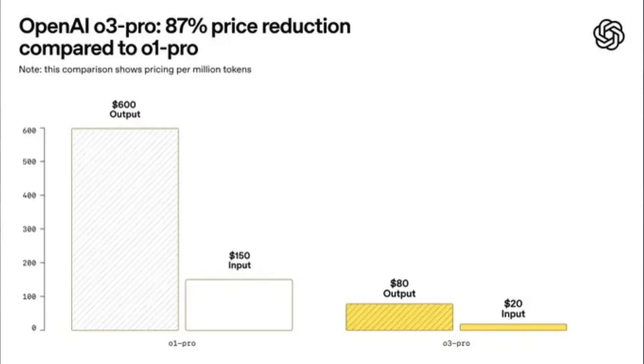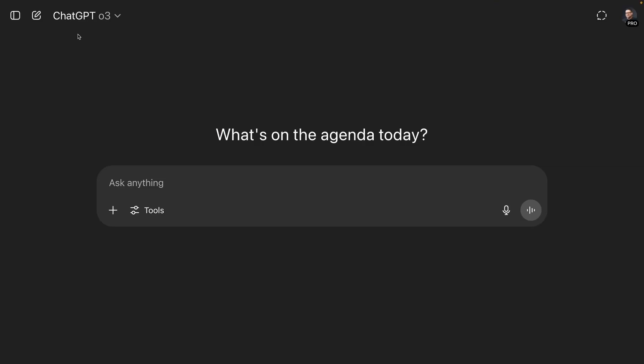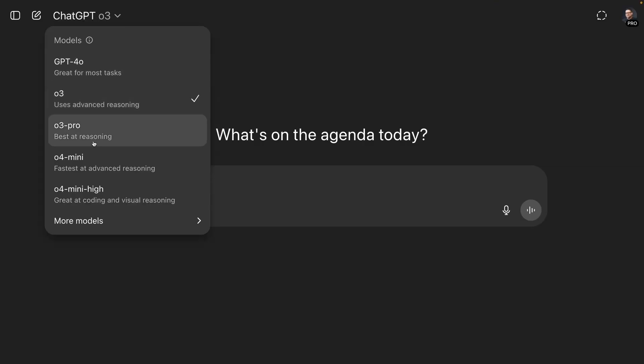With the release of O3 and O3 Pro, OpenAI didn't just improve performance — they lowered the cost dramatically. O3 saw an 87% drop in price. And while O3 Pro isn't the cheapest model available, it's far more affordable than previous top-tier options. This model is currently available for Pro and Team users in ChatGPT today, with Enterprise and EDU customers getting access shortly.